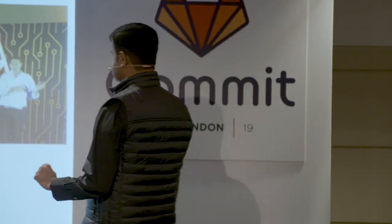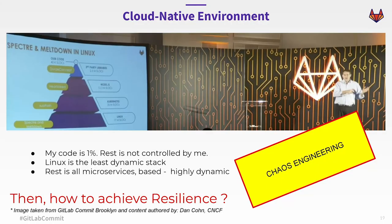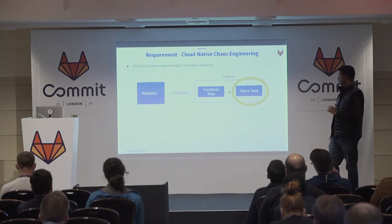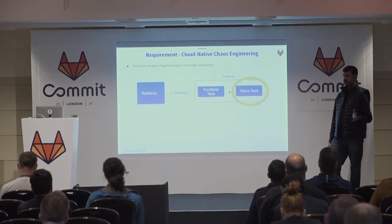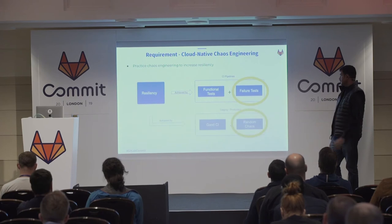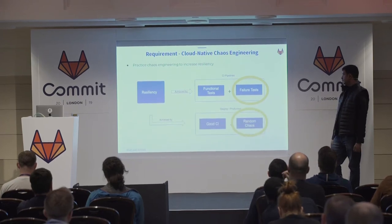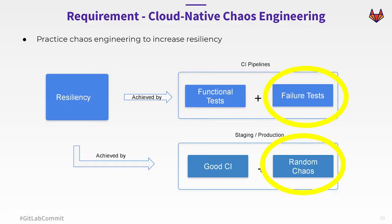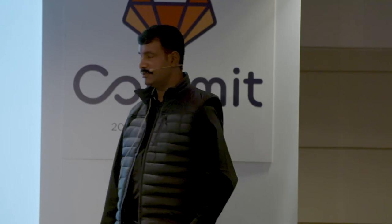How do you achieve reliability or resilience? The answer is chaos engineering. So what is cloud native chaos engineering? It's really about introducing random chaos into production. You have to have a good CI, but also the systems to introduce, analyze, and tune your systems by introducing random chaos.